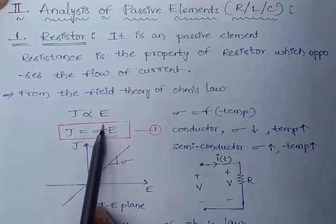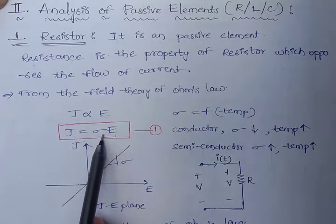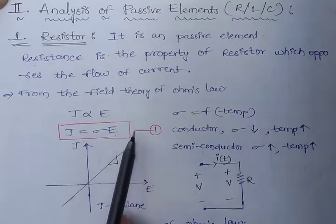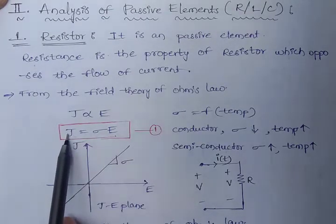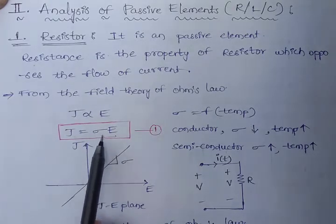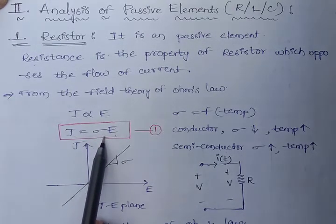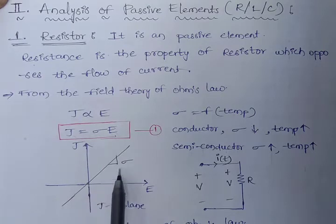Here sigma is the proportionality constant, and we can also call sigma as conductivity. If we compare this equation with y is equal to mx, we get y as J, x as E, and slope m equal to sigma. If we plot this equation in the J-E plane, we get a straight line passing through the origin with slope sigma.